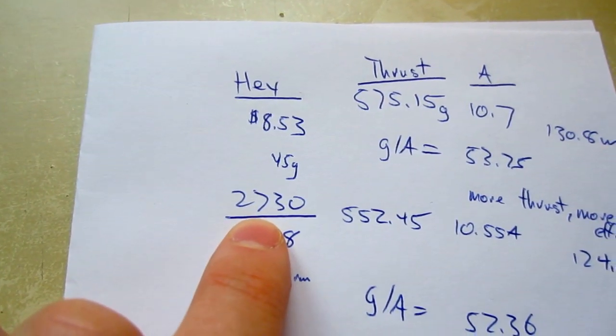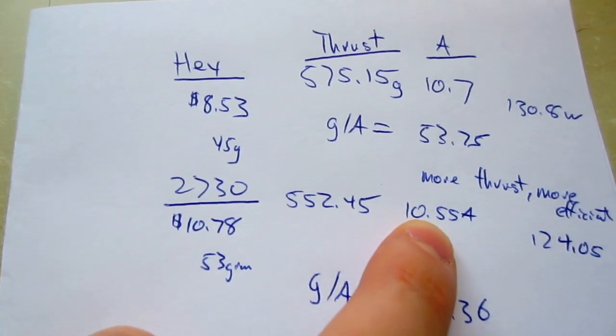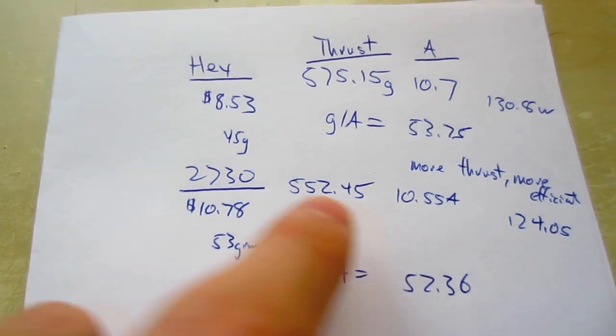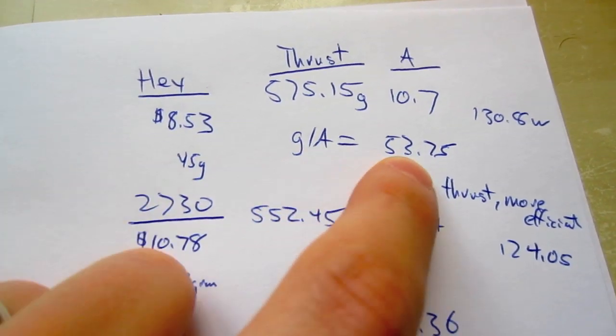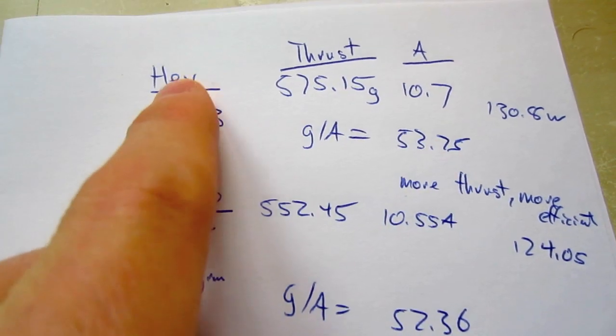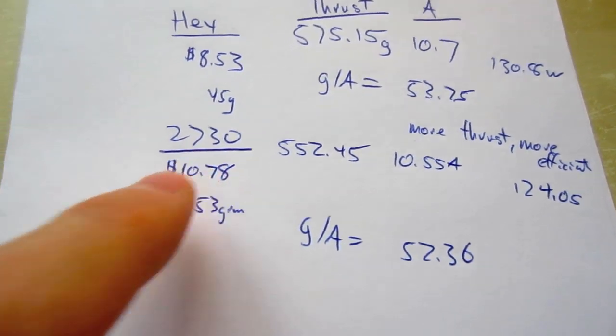And the Turnigy 2730 created an average of 552 grams of thrust at 10.55 amps. So, as a rough look at the efficiency in grams per amp, it was 53.7 with the Hextronic and 52.3 with the 2730.